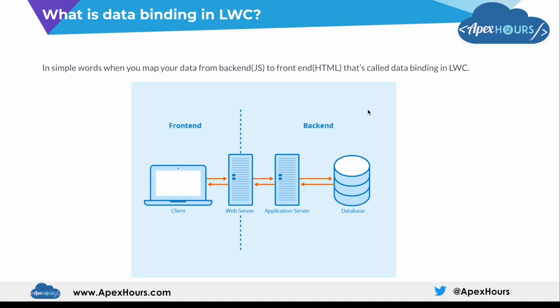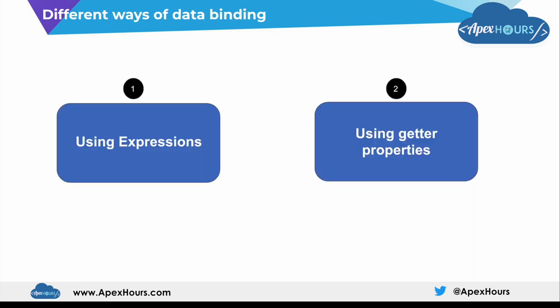If you've started your journey as a developer, you must have heard the terms data binding and rendering. There are many high-level definitions available online, but I'll keep it simple. In simple words, when you map your data from back-end to front-end, it's called data binding. In LWC, the back-end is JavaScript, and for server-side it's Apex. The front-end is HTML, so whenever you bind data from JavaScript to HTML, that's called data binding.